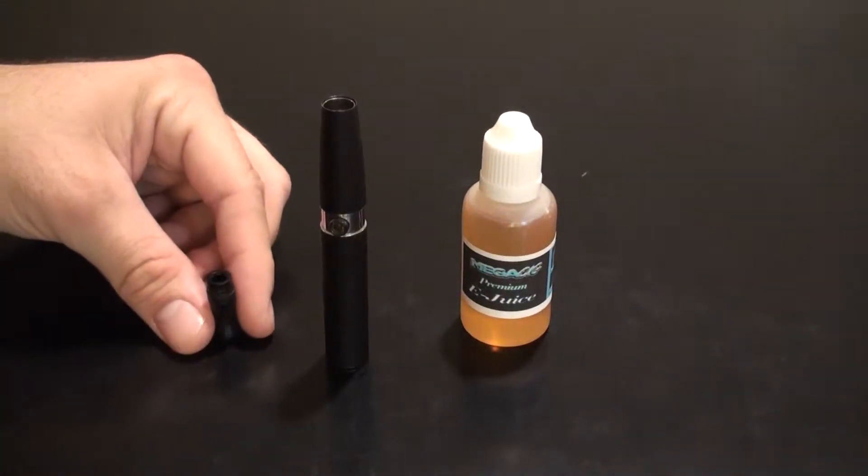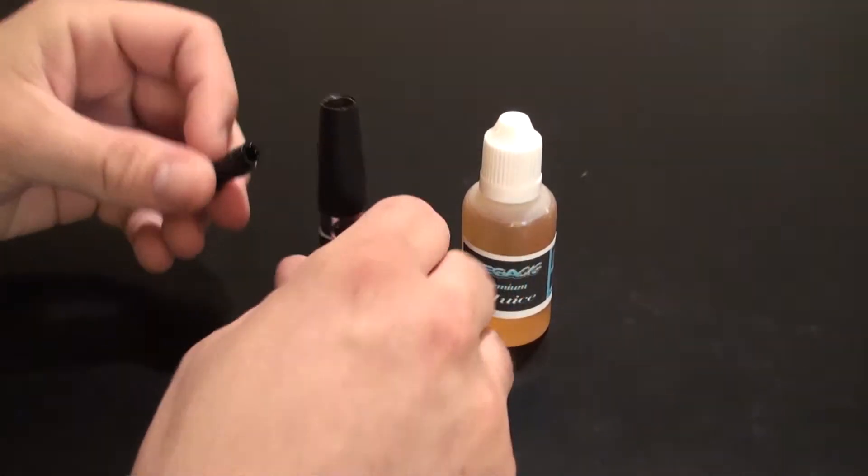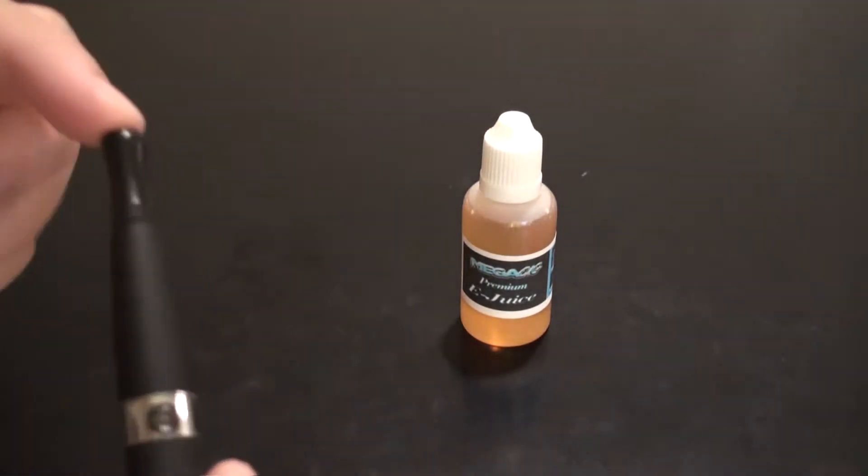Next take your plastic or metal drip tip included in your Ego Megasig kit, snap it onto the top of your Ego Megasig. You should hear a slight click.